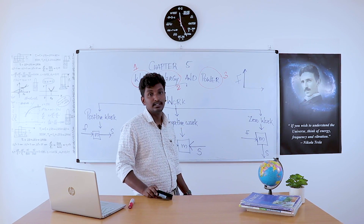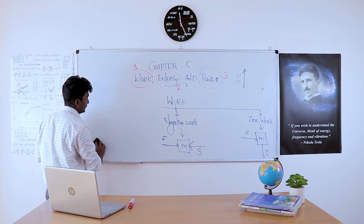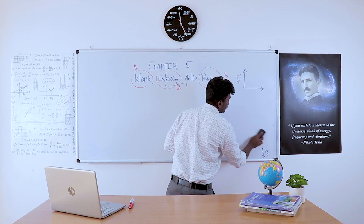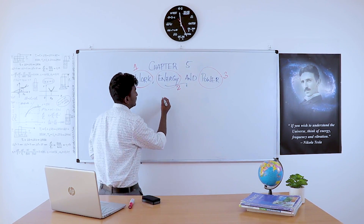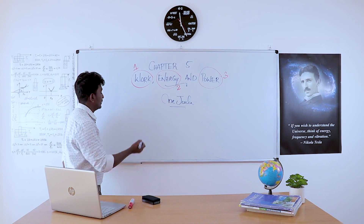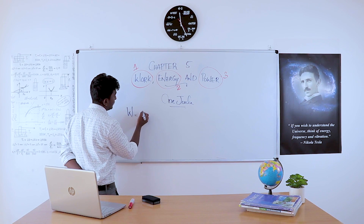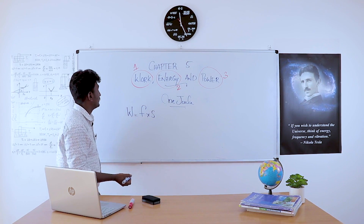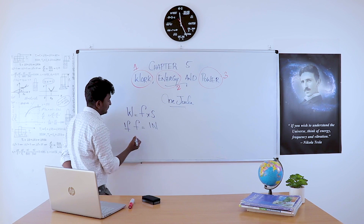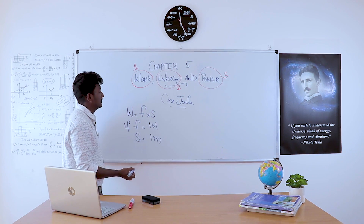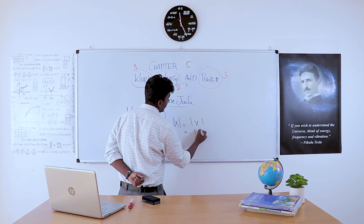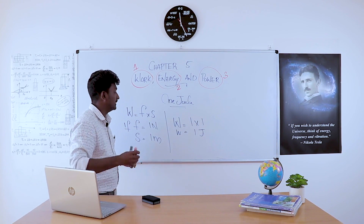We discussed negative and zero work, and the unit of work as Joule. Our next topic is explaining one Joule of work. We know that work is the scalar product of force and displacement, so W = F × S. If force F is equal to 1 Newton and displacement S is equal to 1 meter, then work W = 1 Newton × 1 meter = 1 Joule. That is how we get one Joule of work.